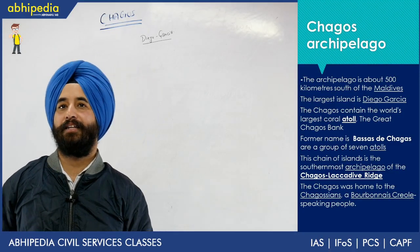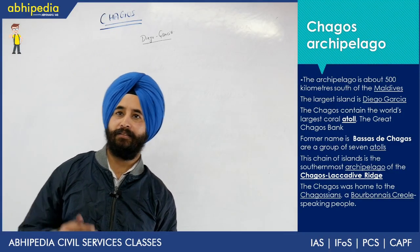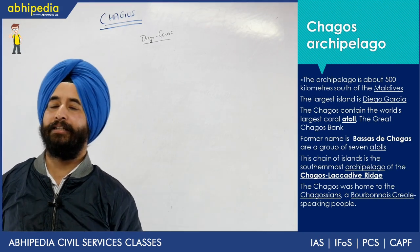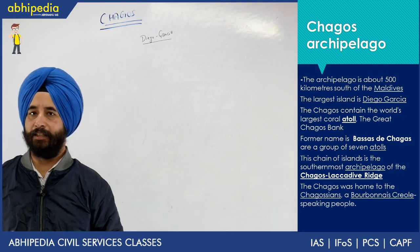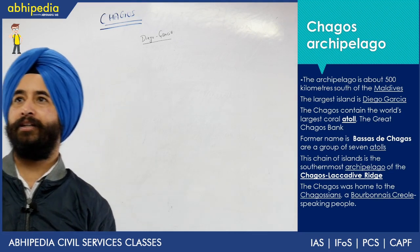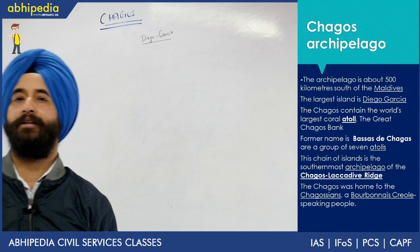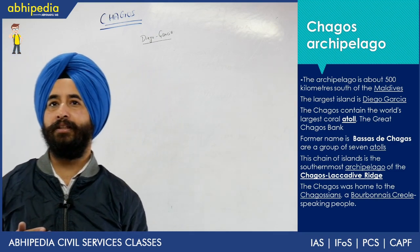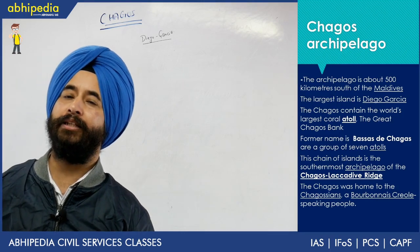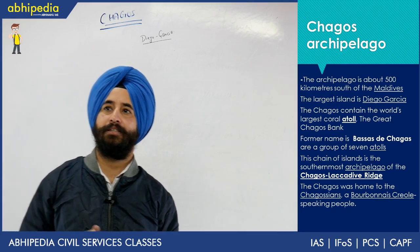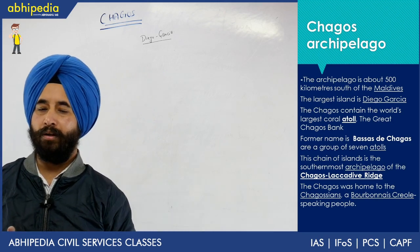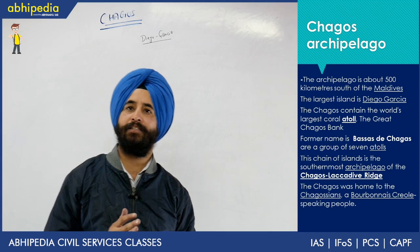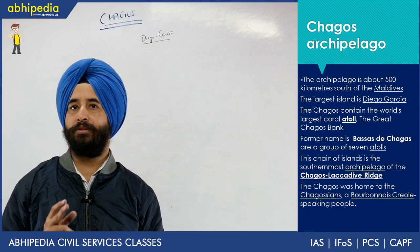Hello friends. Last week we started a series on Disputed Islands. Last week we had an island that was a good island. Today we will start with the Chagos Archipelago. Basically, what is a Disputed Island? Just to recap — a Disputed Island is one that has the possession of two or more countries.